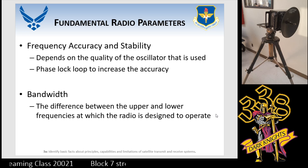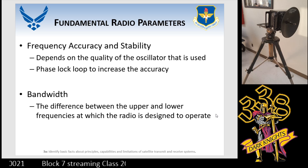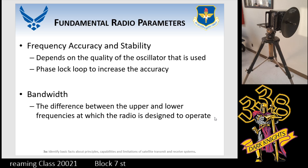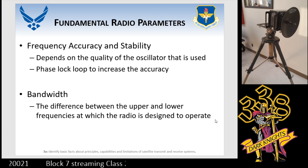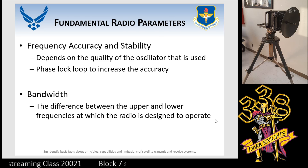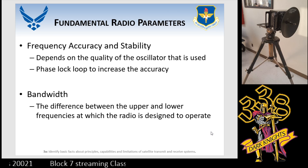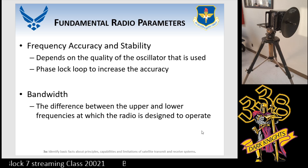Bandwidth is the difference between the upper and lower frequencies of a radio. You can designate it several different ways. For single sideband, the bandwidth is different — your upper sideband should be about 2.7 kHz in difference from where the frequency selectivity is. But if you're talking about the frequency range of a radio, for example our Tisser does 14.4 to 15.25 gigahertz, you can claim that as bandwidth.